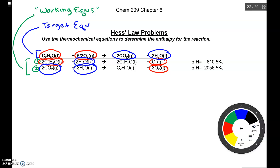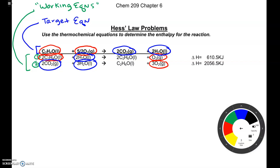My next step is coming up with a strategy for how to modify equations 1 and 2. Looking at equation 1, the two moles of C₂H₄O only show up in one spot across all working equations. My target equation needs just one mole of it, but equation 1 has two moles. To fix this, I need to multiply everything in equation 1 by one half, which will match that one mole of C₂H₄O in the target equation.